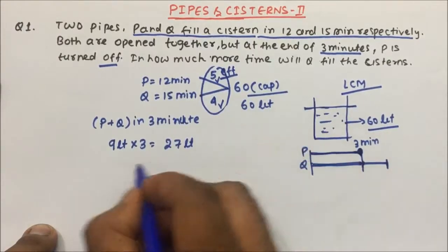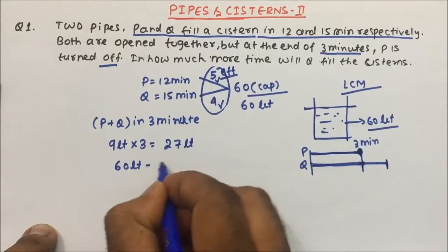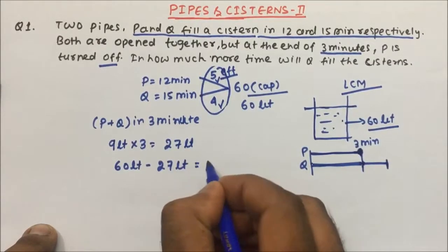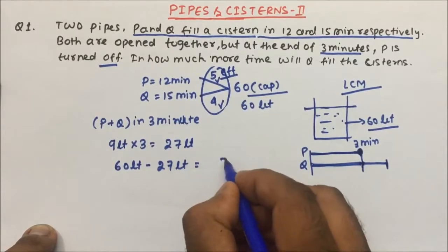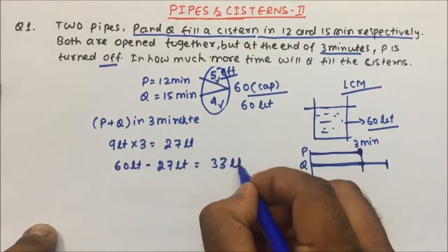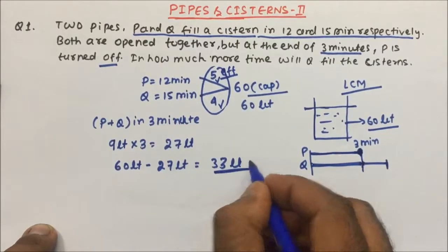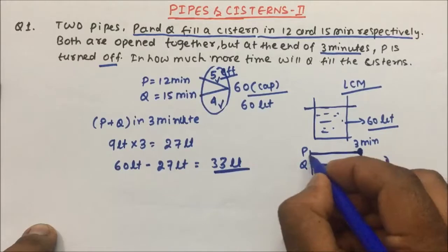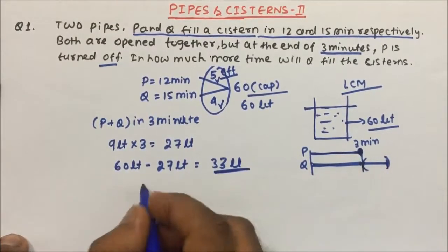Out of the 60-liter tank, 27 liters are filled by P and Q together. The remaining water to be filled is 60 minus 27 equals 33 liters. This 33 liters still has to be filled — and now only Q will fill it, because P is closed after 3 minutes.